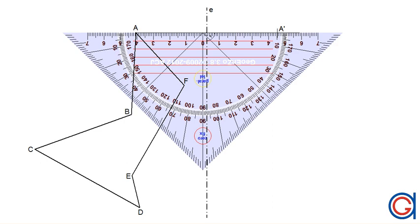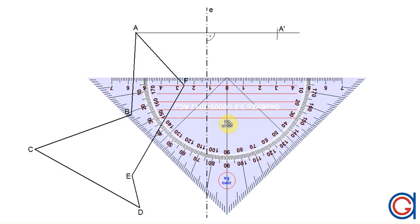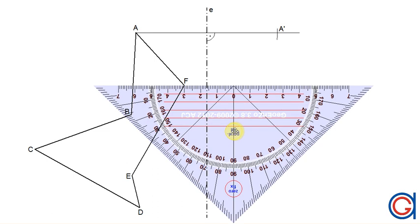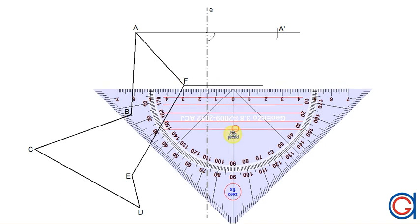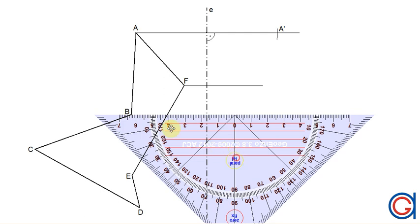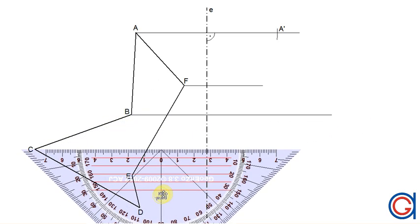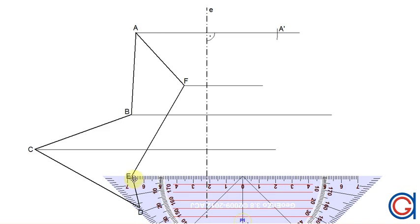We will repeat this process with each of the rest of the vertices of the given figure. So F, we will draw a horizontal line and now do the same with vertex B, vertex C, vertex E, and vertex D.